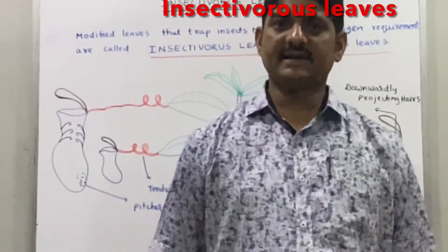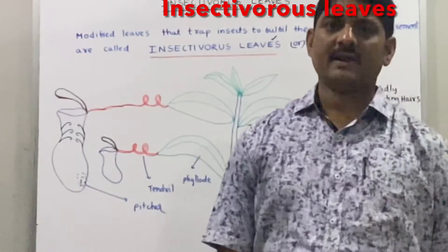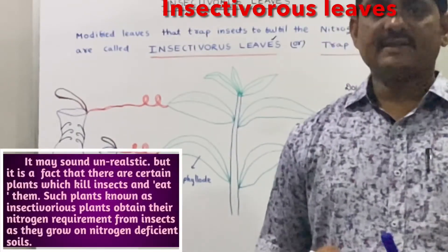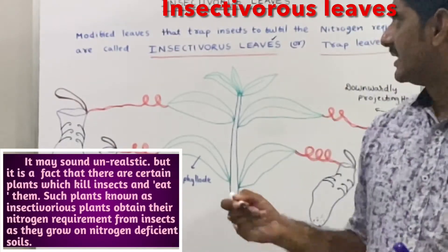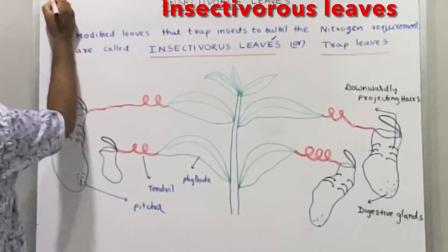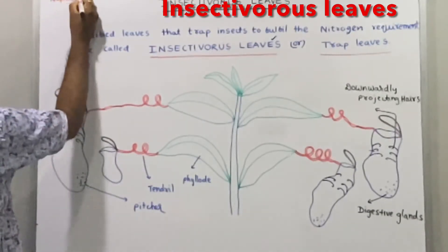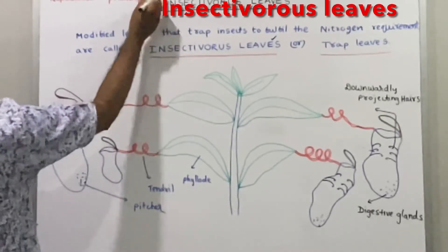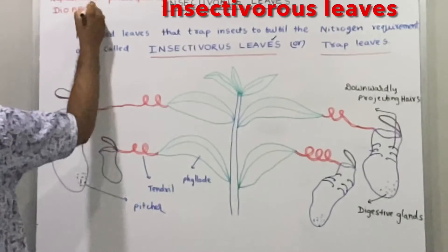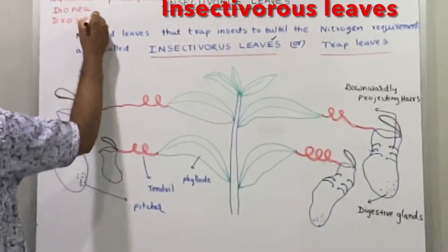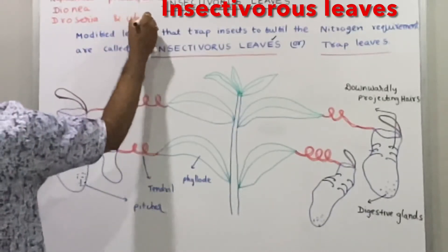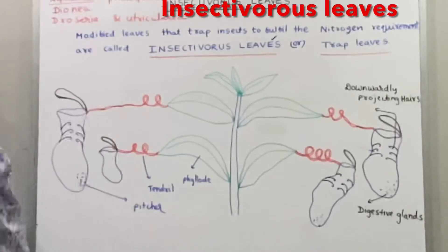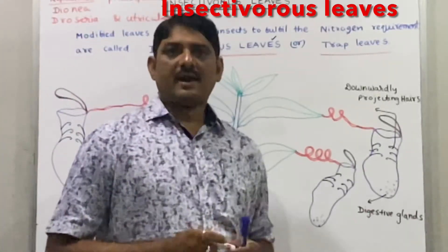Welcome back. Today's topic is insectivorous plants — plants with modified leaves that trap insects to fulfill their nitrogen requirement. These plants generally grow in nitrogen-deficient soils. Examples of insectivorous plants include Nepenthes, Dionaea, Drosera, and Utricularia, commonly known as bladderwort.